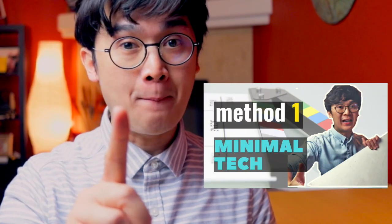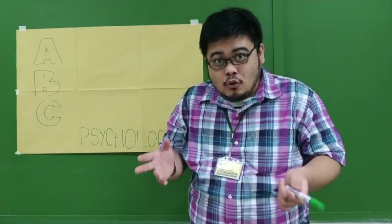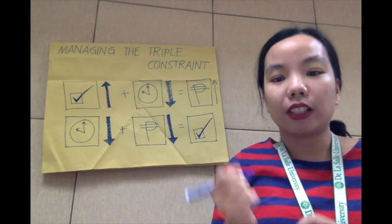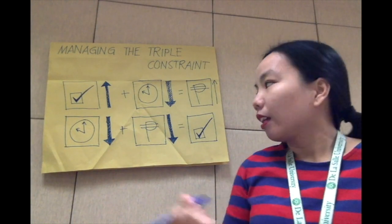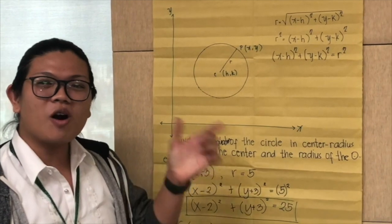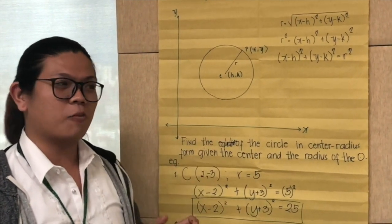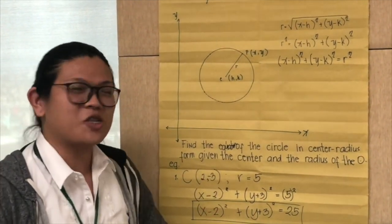So without further ado, let's start with method number one: the minimal tech method. In this particular method, I'm just using my whiteboard, my marker, my camera and computer, and my handwriting in producing my own content. With this method, you don't need a lot of technology. You don't even need a lot of editing skills to be able to produce your own lessons for your students to see.